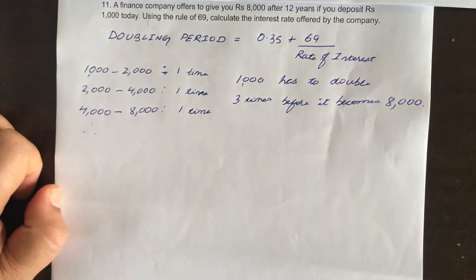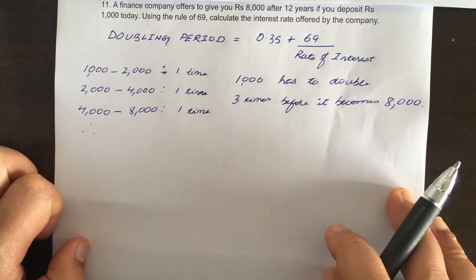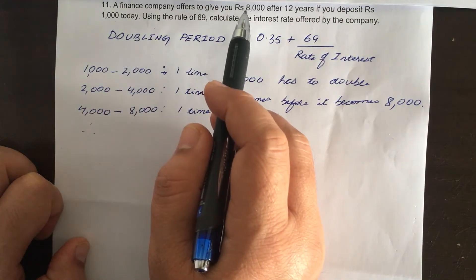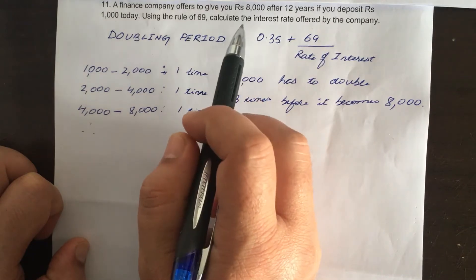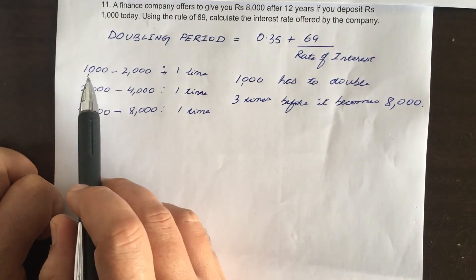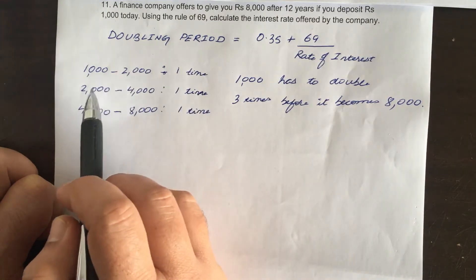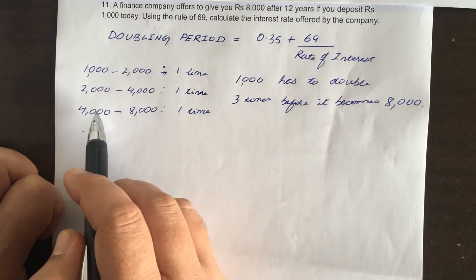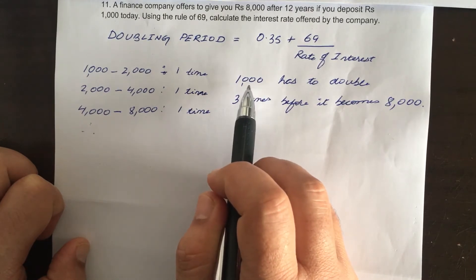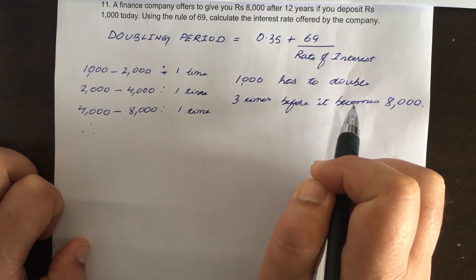Using the rule of 69, how do we solve this? How long will it take for 1,000 rupees to grow to 8,000 rupees, and how many times must it double? From 1,000 to 2,000 is one doubling; from 2,000 to 4,000 is another; and from 4,000 to 8,000 is another. So in total, 1,000 rupees has to double three times before it becomes 8,000.